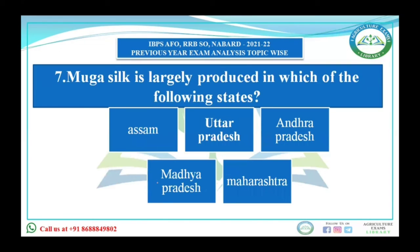The next question: Muga silk is largely produced in which state — Assam, Uttar Pradesh, Andhra Pradesh, Madhya Pradesh, or Maharashtra? The answer is Assam. Muga silk, also known as Muga, has its largest production area in Assam and is indigenous to northeastern India. India has a monopoly on Muga silk cultivation. It is semi-domesticated, multivoltine, meaning two generations are completed in a year.